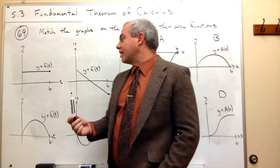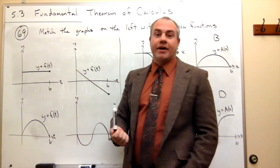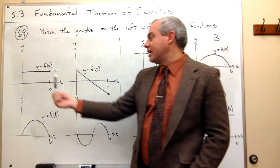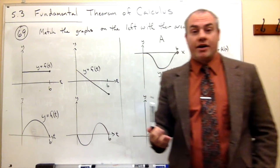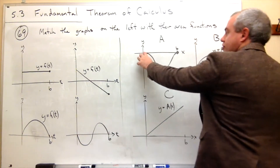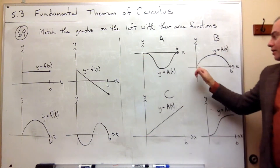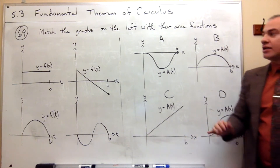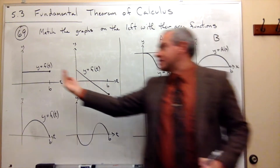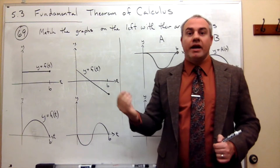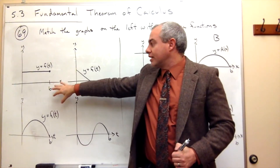The first thing I should see is that for all of these, when I'm just sitting at 0, how much area have I accumulated? Well, I haven't picked up any area, because I'm moving from 0 across and haven't accumulated any area yet. So all of these should start at 0, and they do — I have 0 here, 0 here, 0 here, 0 here. But as I move across, I start to accumulate area, and that will tell me which area function should be associated with each graph.